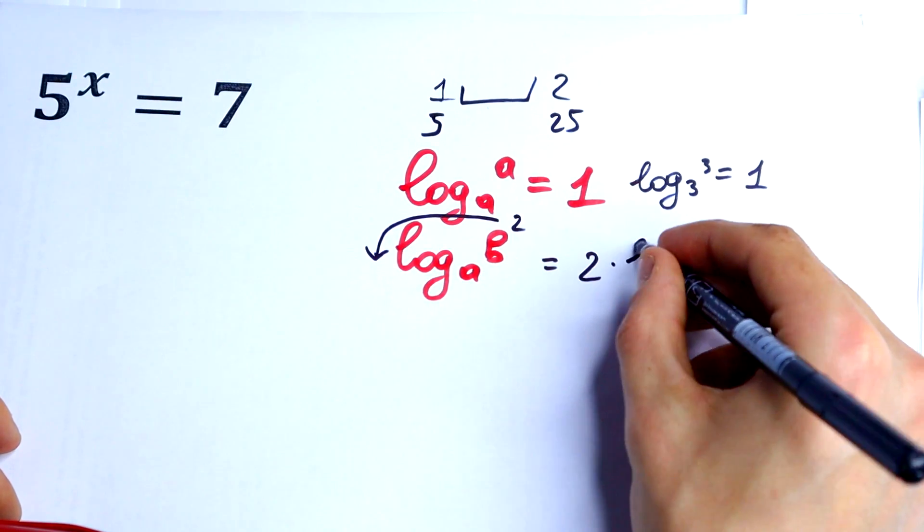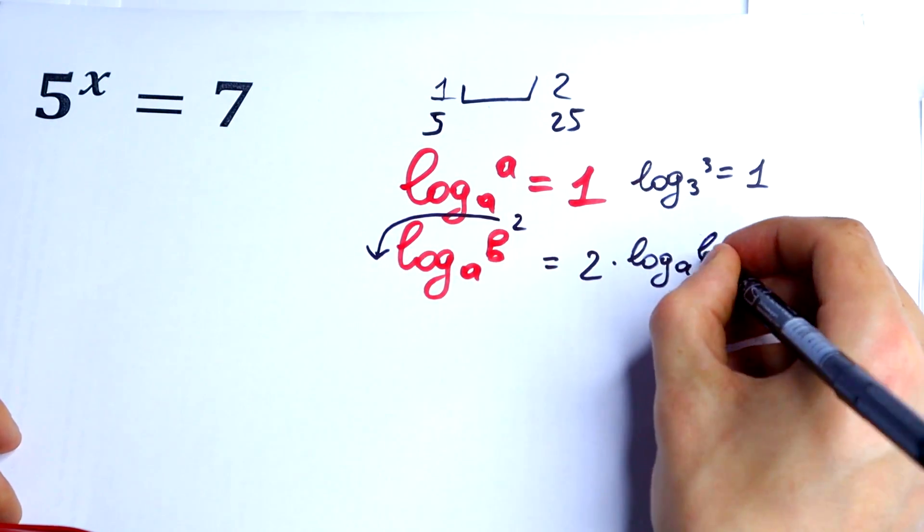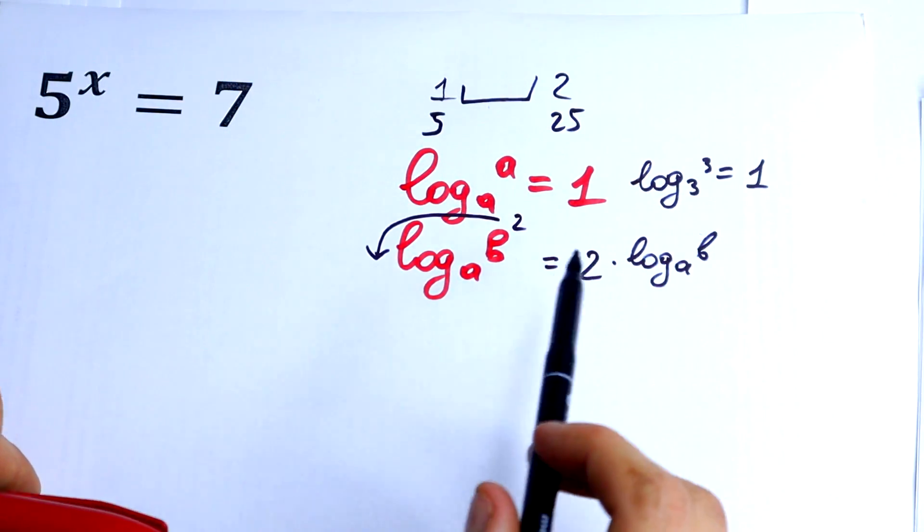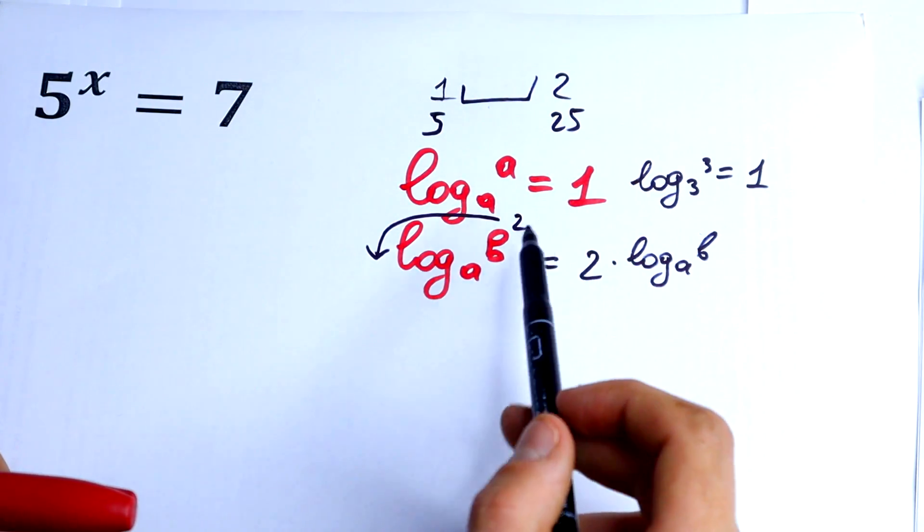We will have 2 times log base a of b. So the exponent jumps to the front.